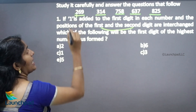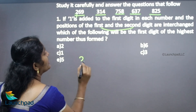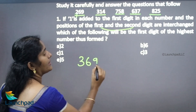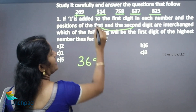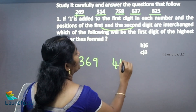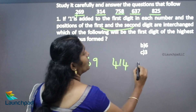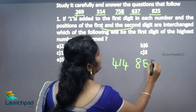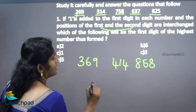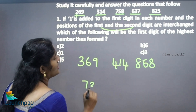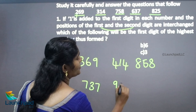First we do the operation of adding 1 to the first digit: 2+1=3, so 269 becomes 369. Then 314 becomes 414. Then 7+1=8, so 758 becomes 858. Then 637 becomes 737. After that, 825 becomes 925.